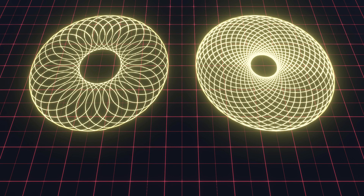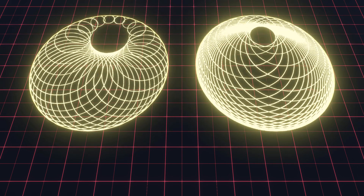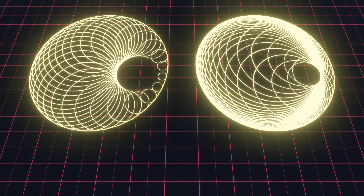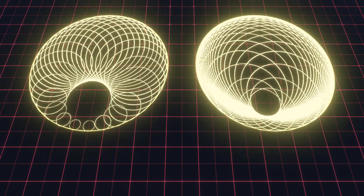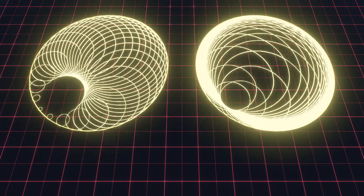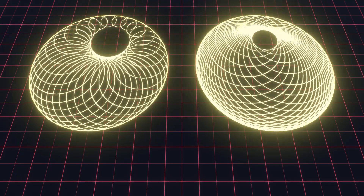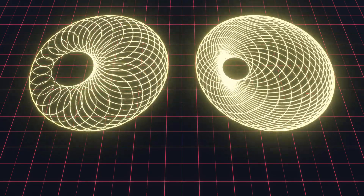Welcome to part 3 of the Circle Tangent Visuals in Unity Tutorial by PeerPlay. In the previous part we calculated circles that are tangent to an inner and an outer circle. In this part we will add interactivity by controlling the position and size of the inner circle with a game controller.